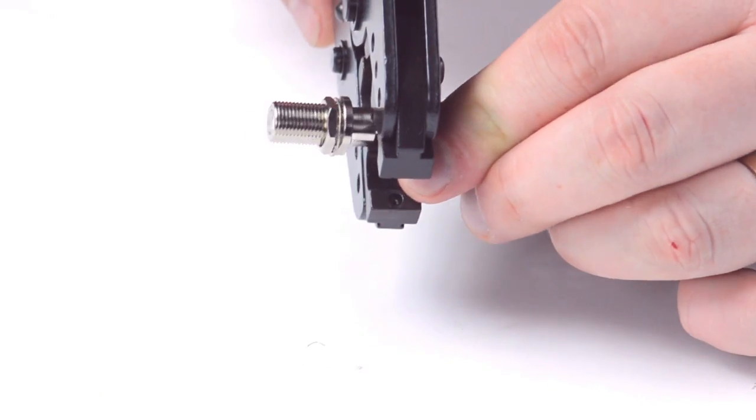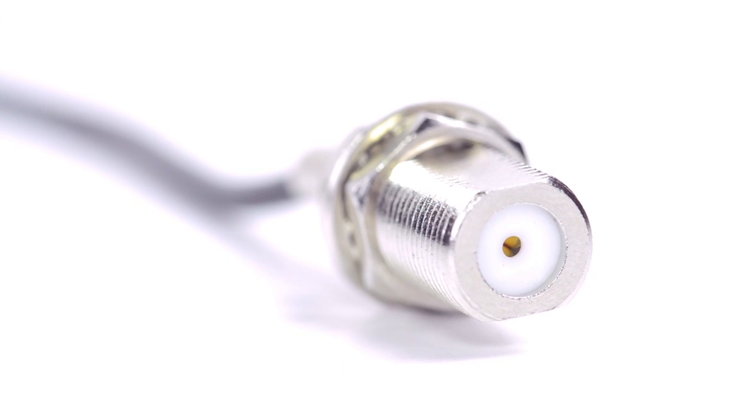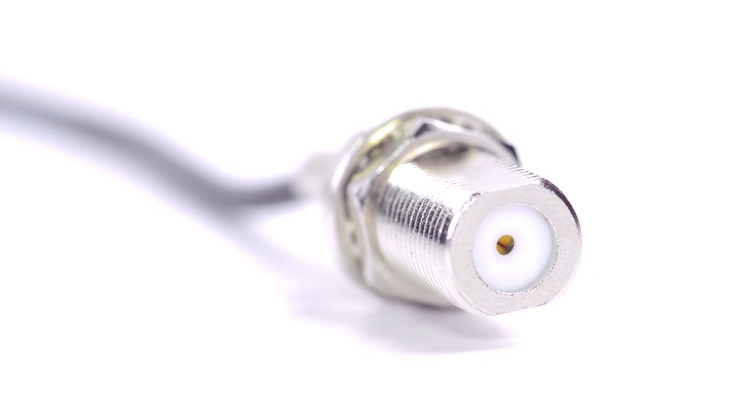Crimp the ferrule onto the outer jacket to complete termination. Congratulations! You have successfully installed the F-type connector.